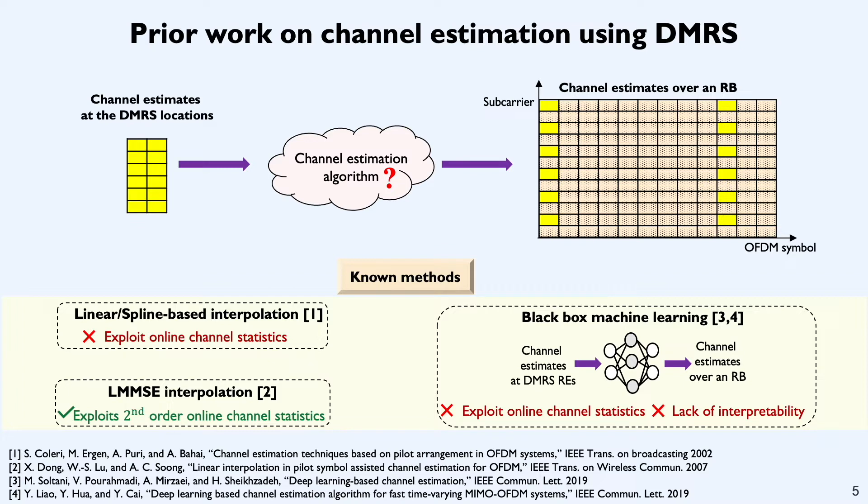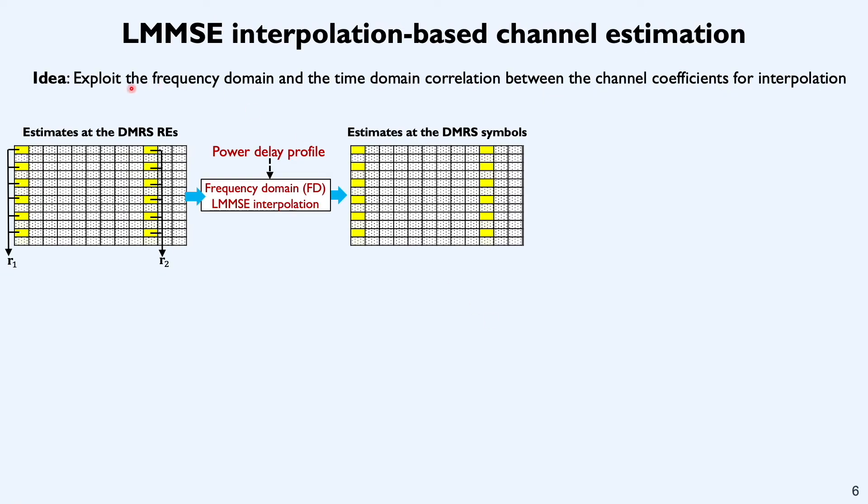Before I get into the details of our algorithm, I'll first give you a quick overview of LMMSE interpolation which exploits second order online channel statistics. In this technique, we first make the assumption that the channel follows wide-sense stationary uncorrelated scattering. Under this assumption, interpolation can be done in two stages. In the first stage, frequency domain interpolation is done, and in the second stage, time domain interpolation is done.